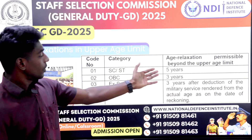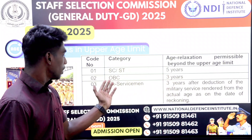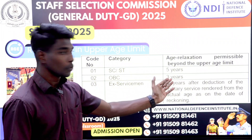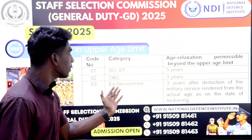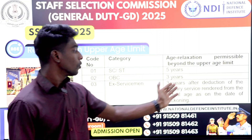For SC/ST candidates, you will get a 5-year age relaxation, and for OBC candidates it is 3 years. For Ex-Servicemen, there is also a relaxation of 3 years.